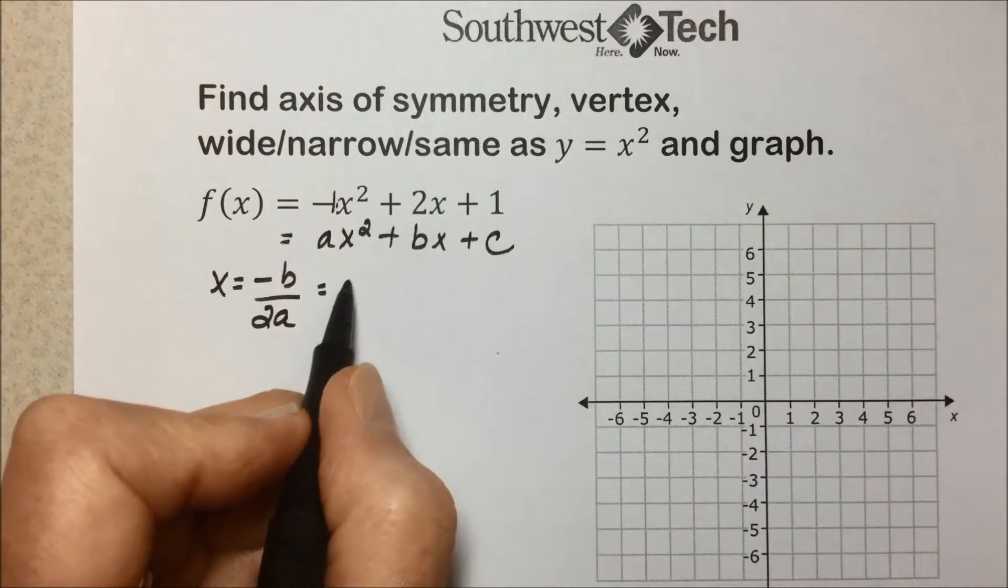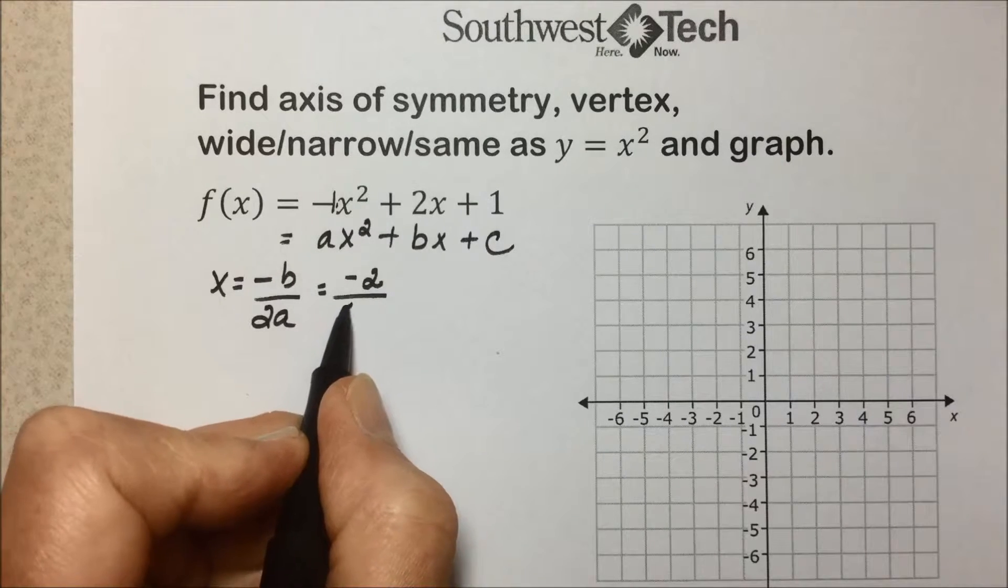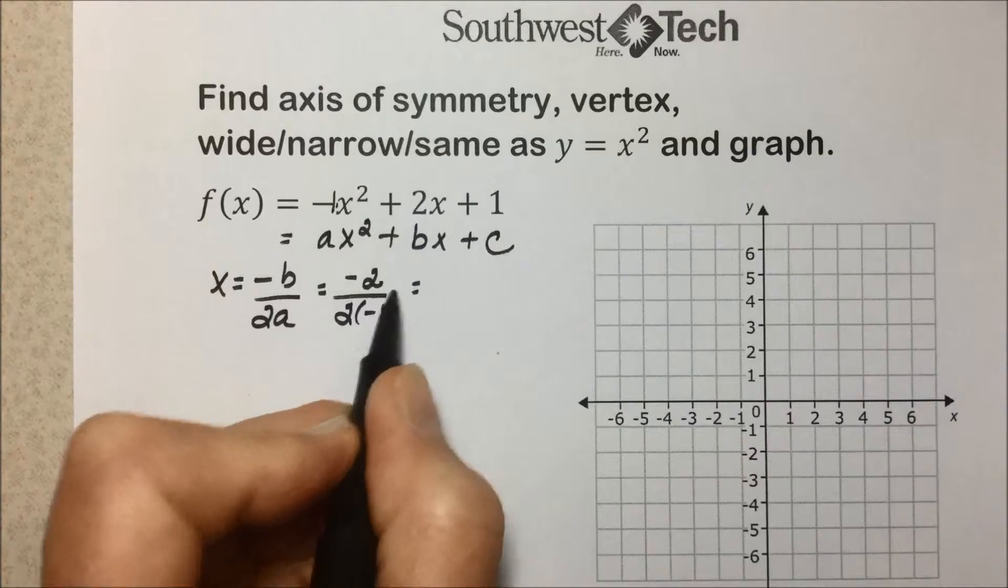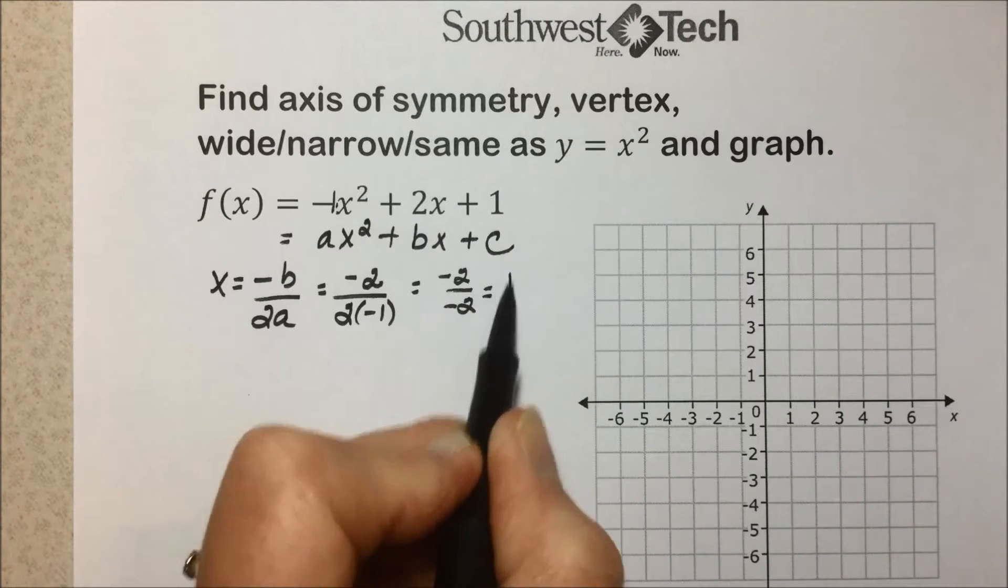So it's the opposite of b, so it'll be the opposite of a positive 2, which is -2, over 2 times a, which is -1. This will give us -2/-2, which results in 1.